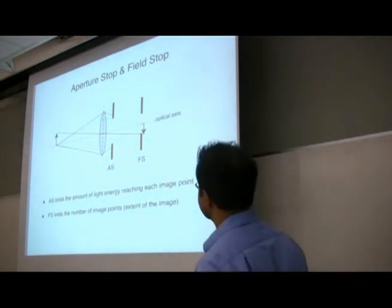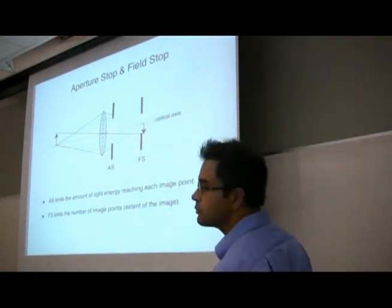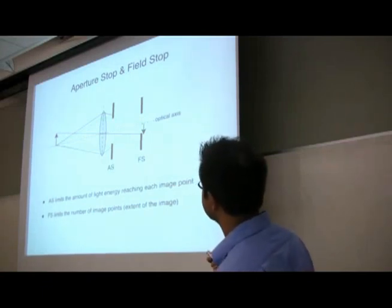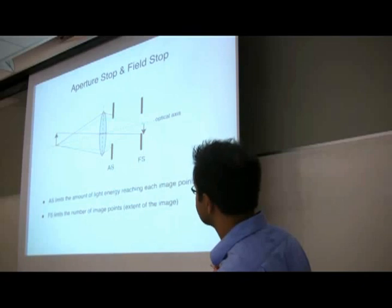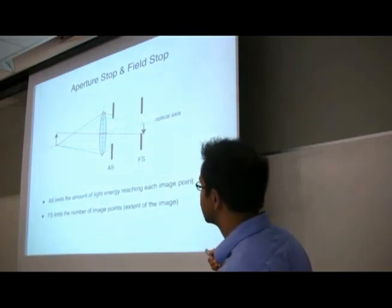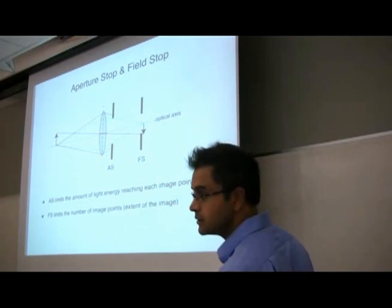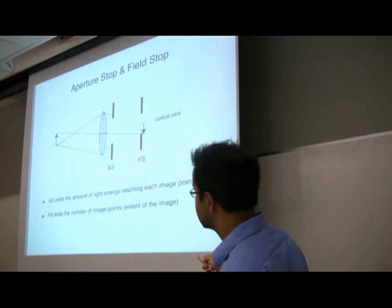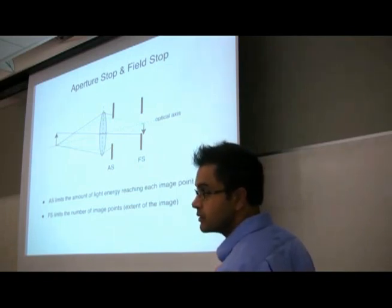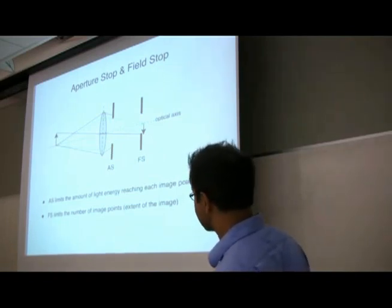A few other things you should be aware of: aperture stop and field stop. The aperture stop limits the amount of energy reaching each image point — it's a way to limit aberrations of the lens. It limits some rays coming at very large angles; small angle rays pass through, but large angle rays are blocked. The formal definitions are in the next slide.